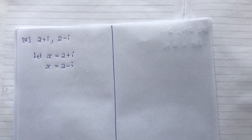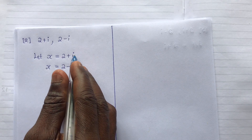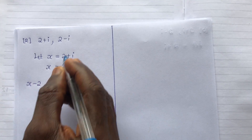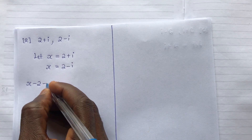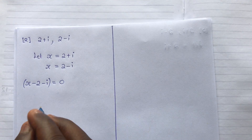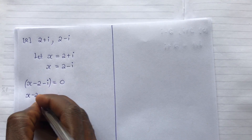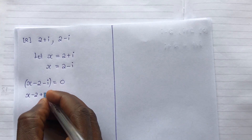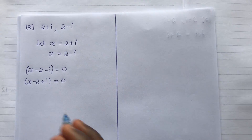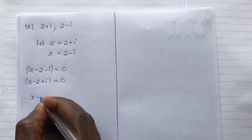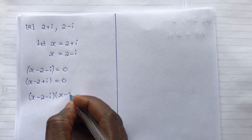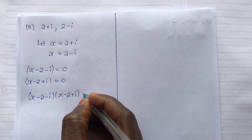Let x equal two plus i, and also let x equal two minus i. Don't use different variables — you have to use the same variable. We bring everything to the left-hand side and equate to zero. So we get x minus two minus i equals zero for the first bracket, and x minus two plus i equals zero for the second bracket. Multiplying both brackets: (x minus two minus i)(x minus two plus i) equals zero.